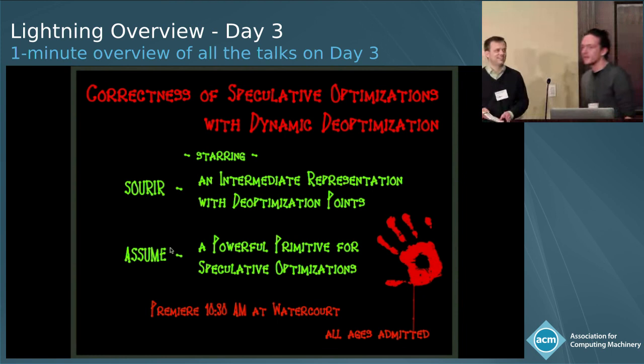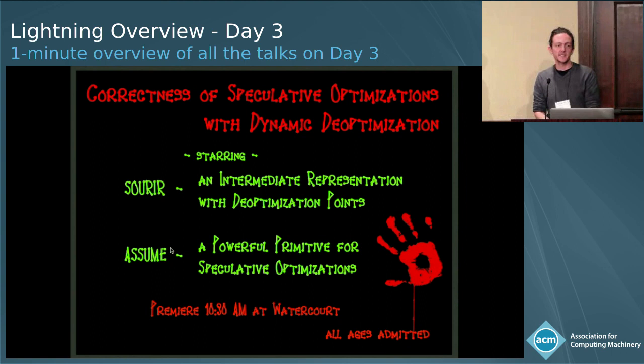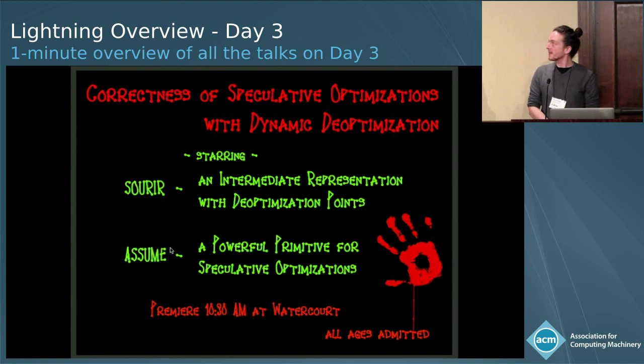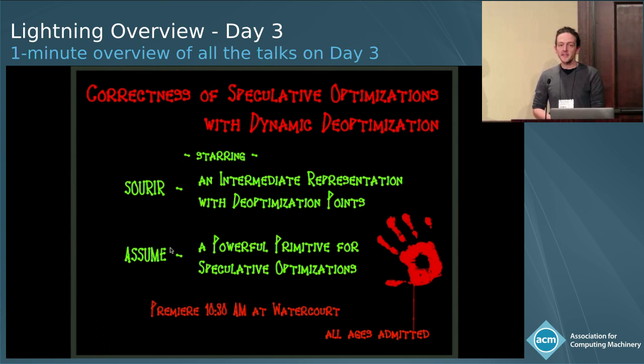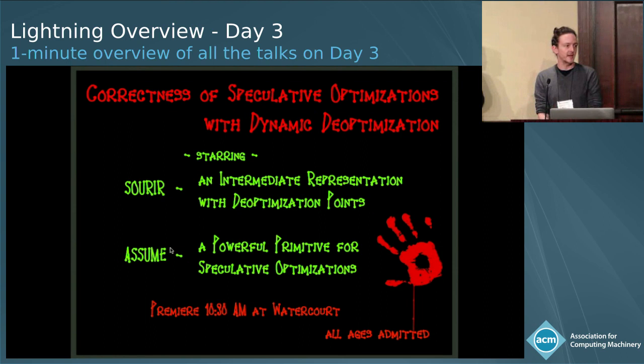Good morning. Probably after last week, I don't have to convince you anymore that speculation is tricky. I'm going to talk about correctness of speculative optimization with dynamic de-optimization. We formalized speculation in the context of JIT compilers, and in this talk I'll present how to combine speculation with traditional compiler optimizations and then prove correctness of those optimizations. The talk will be right after this lightning round in the other room.